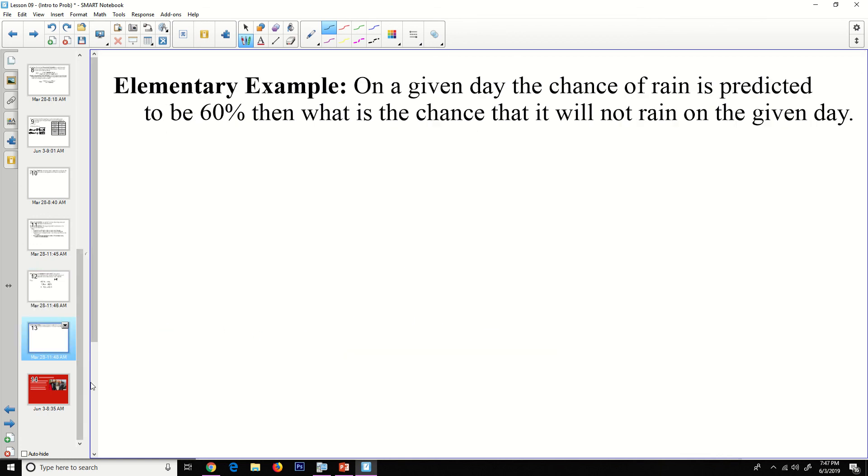Let's do an elementary example. On a given day, the chance of rain is predicted to be 60%. Then what is the chance that it will not rain on the given day? So the probability that it will not rain is equal to one minus the probability that it will rain. And we know that that probability is 60%, so 0.6. So the probability that it won't rain is 0.4 or 40%, depending on how the question asks you to respond.